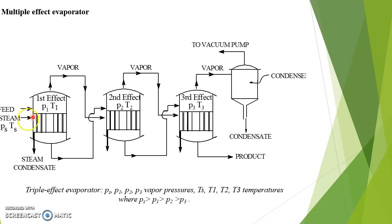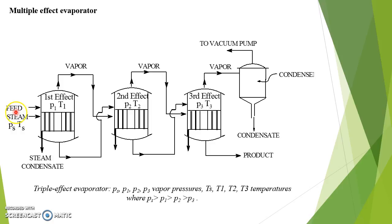Now we will study the multiple effect evaporator. This is a typical diagram of a triple effect evaporator. This indicates the feed. Steam is also indicated. PS indicates the vapor pressure. PS, P1, P2, and P3 indicate the vapor pressures of the different evaporators as well as the starting steam. TS, T1, T2, and T3 are the different temperatures of the different evaporators.